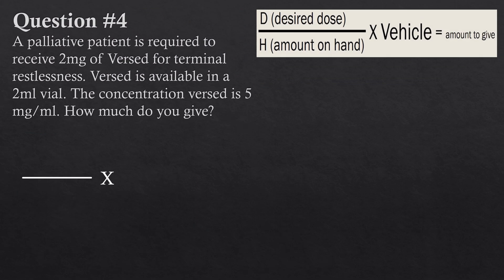Question four: a palliative patient is required to receive 2 milligrams of Versed for terminal restlessness. Versed is available in 2 milligram per 2 milliliter vials; the concentration of Versed is 5 milligrams per mL — how much do you give? This question gets a little trickier, but we solve it the exact same way. The desired dose is 2 milligrams, so that goes on top.